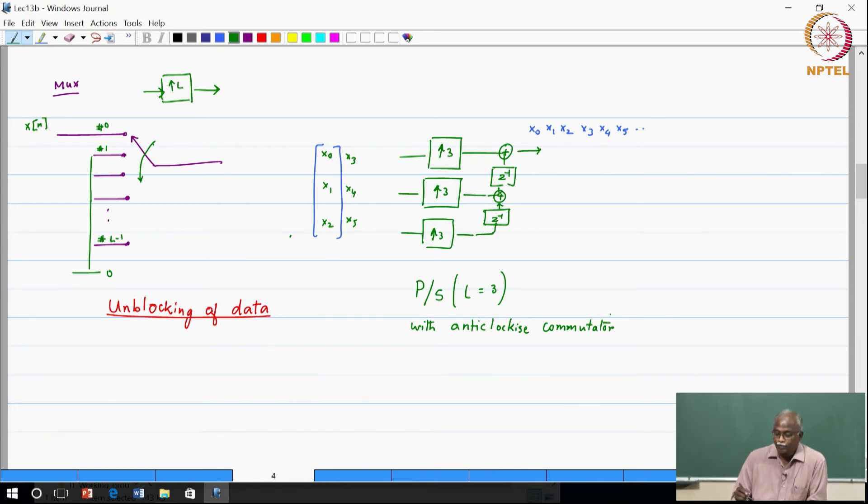And like last time there is a short form notation which we will just say parallel to serial with L, which means basically this structure with the anti-clockwise commutator being implemented, which means that you would have to combine upsamplers with delays and then appropriately combine them and take them out. So again simple concepts but once you start putting it together you will see that there are some very interesting results that we can obtain.